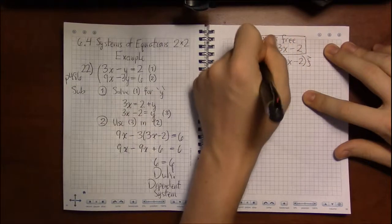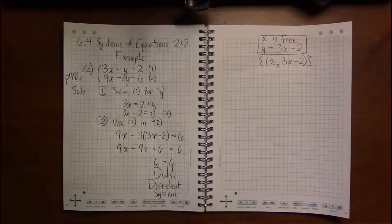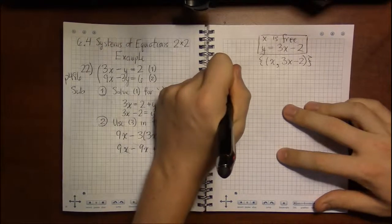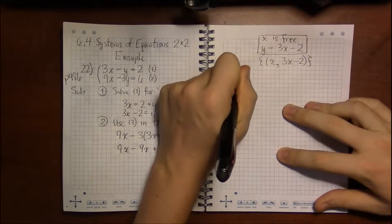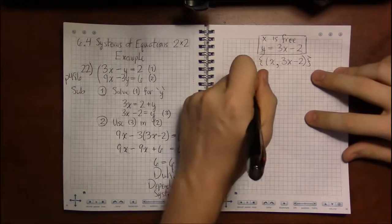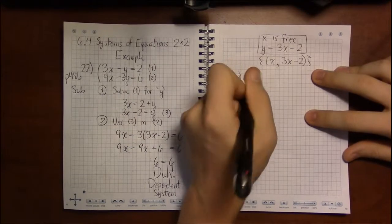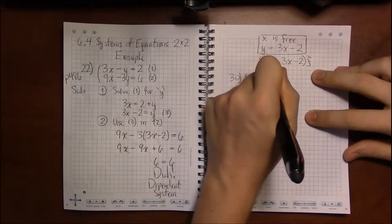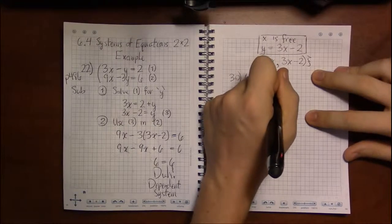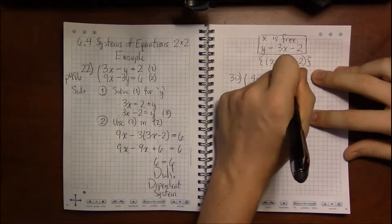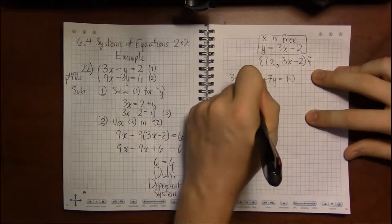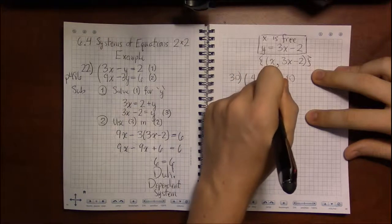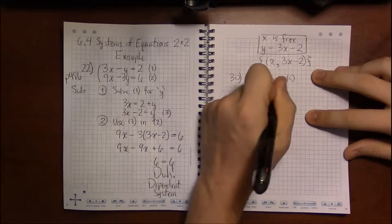But really, this is perfectly acceptable. Let's take a look at another dependent system. So I'm looking at problem 30, where the first equation is 4x + 7y = 10 and then 10x + (35/2)y = 25.